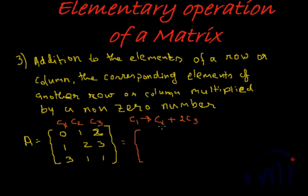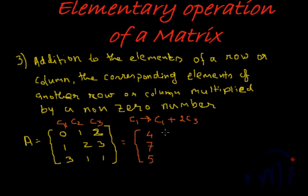So c1 becomes c1 + 2×c3. The first element: 0 + 2×2 = 4. The second element: 1 + 2×3 = 7. The third element: 3 + 2×1 = 5. The remaining columns remain the same.